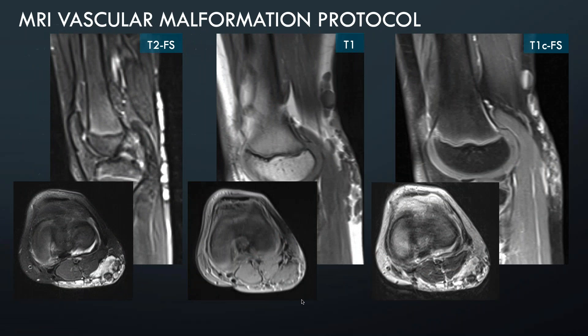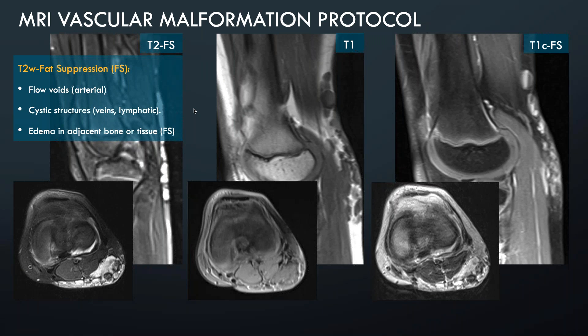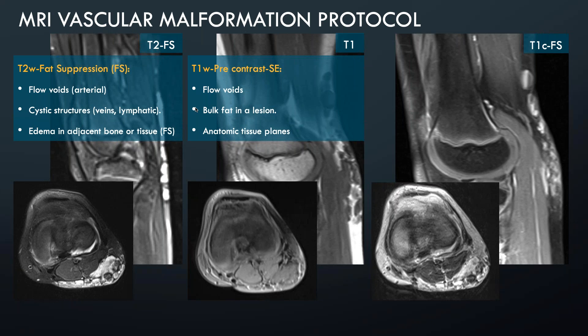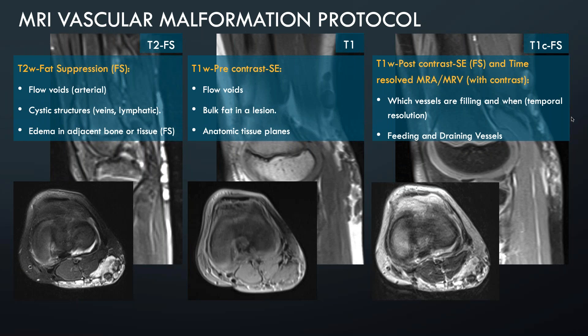To assess a vascular malformation fully on MRI, a T2 fat-saturated sequence is generally helpful to find flow voids related to arterial issues, cystic structures in venous and lymphatic anomalies, and edema in adjacent bone or tissue. T1 is great for finding flow voids, showing bulk fat in a lesion, and clearly defining anatomic tissue planes. A T1 post-contrast fat-saturated image after gadolinium shows which vessels are filling and when, providing excellent temporal resolution, and helps identify the number and size of feeding or draining vessels — particularly important for procedure planning.